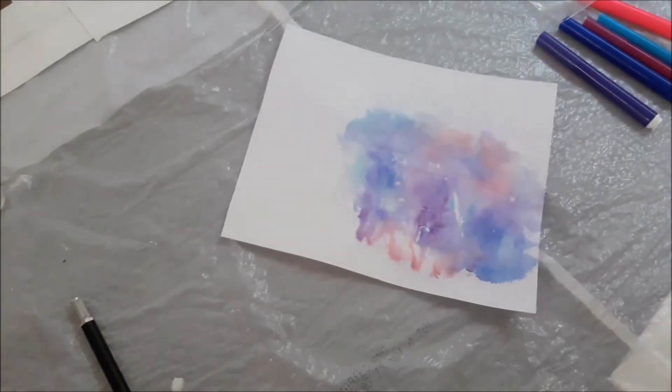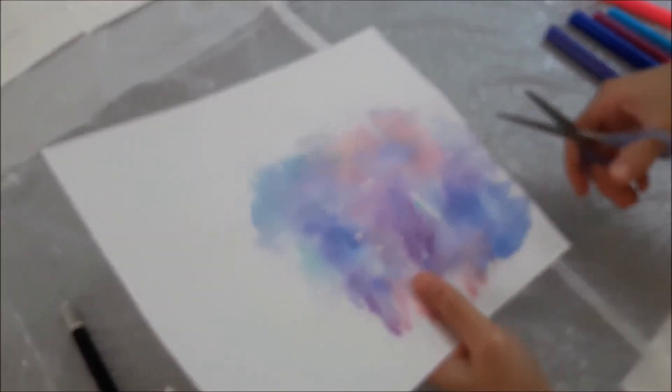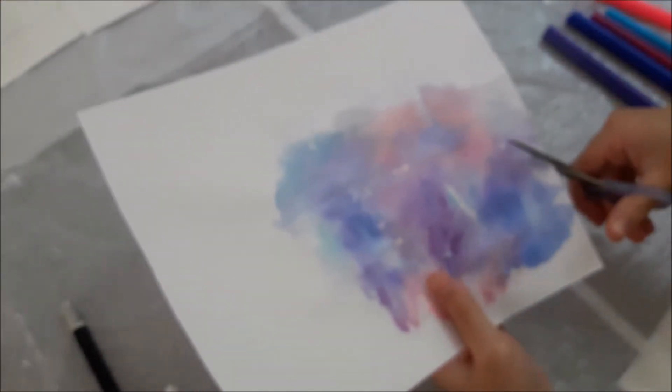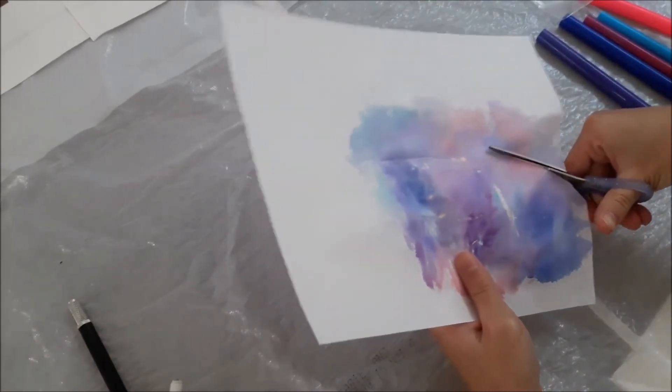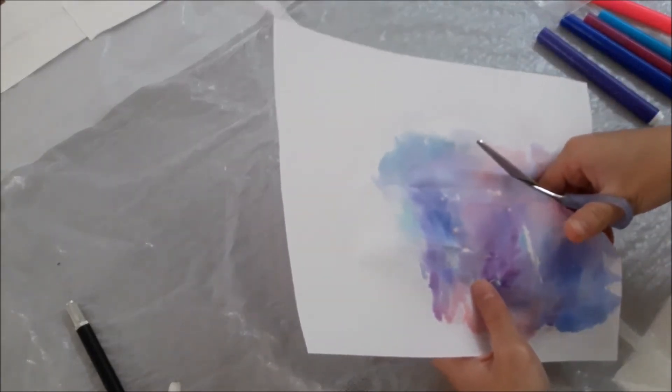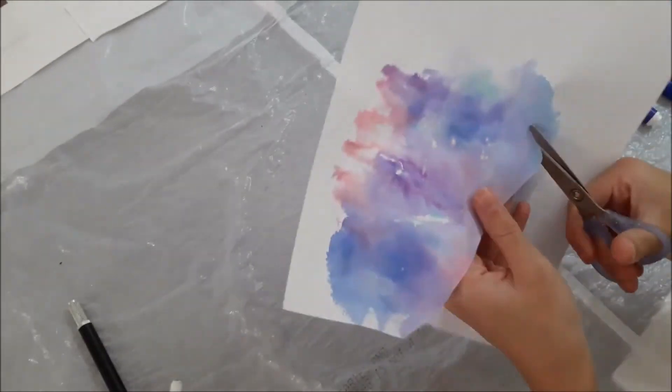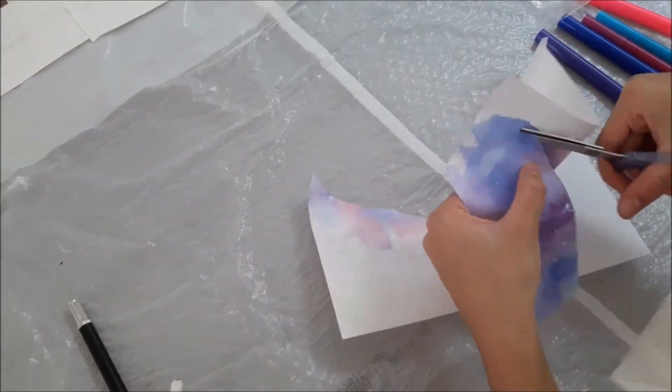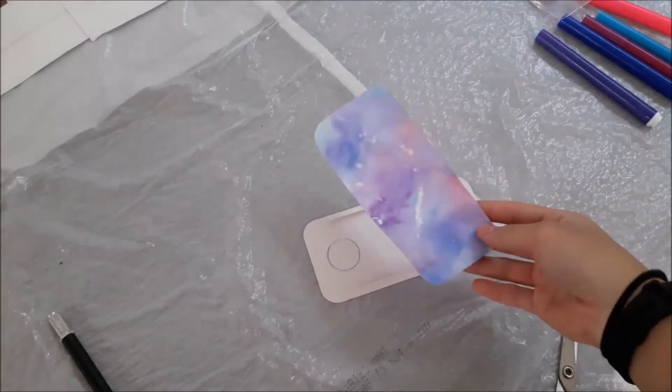Once you are done tracing, you can take your scissors and start cutting it out. Once you are done cutting it out, you will want to cut a hole for your camera.